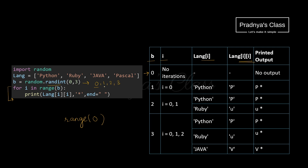Let's check out the other possible values. If B is 1, it means range of 1 — the loop will execute once with the value of I as 0. It will be language[0][0]. At the 0th position we have the string 'python', and using these two indices we are taking the character at index 0, which is 'P'. After the character, we concatenate a star, so we get 'P*'. We got one of the outputs.